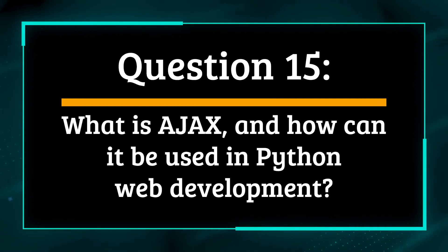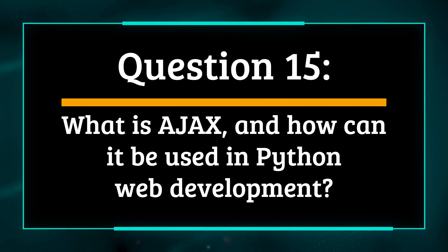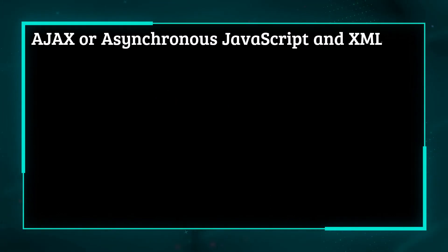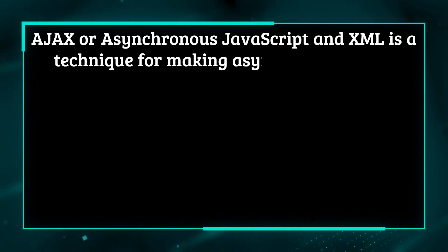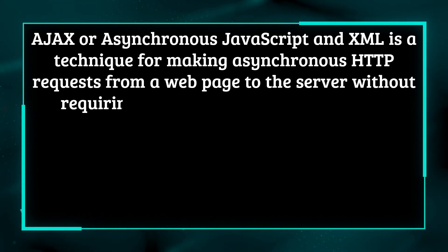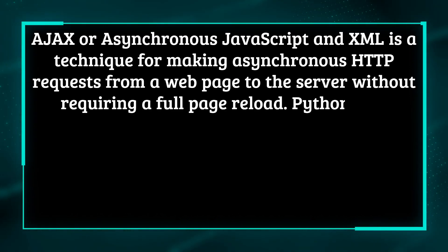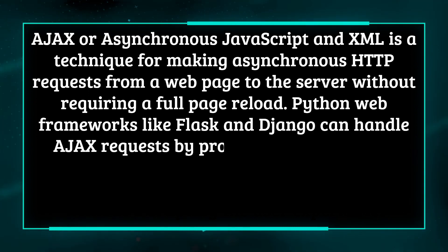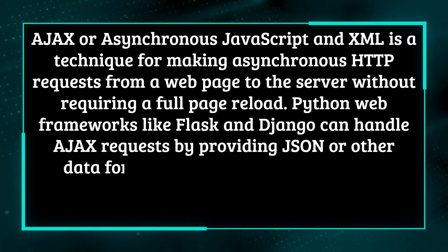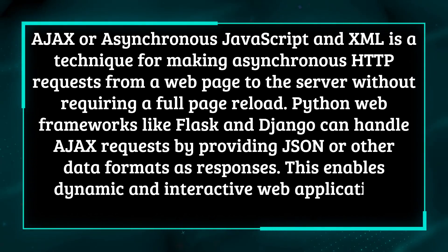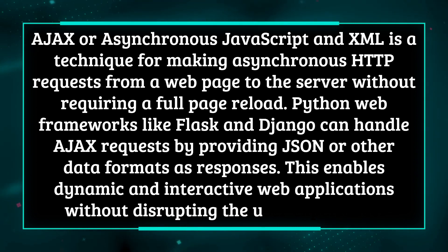Question 15: What is AJAX, and how can it be used in Python web development? AJAX, or asynchronous JavaScript and XML, is a technique for making asynchronous HTTP requests from a web page to the server without requiring a full page reload. Python web frameworks like Flask and Django can handle AJAX requests by providing JSON or other data formats as responses, enabling dynamic and interactive web applications without disrupting the user experience.